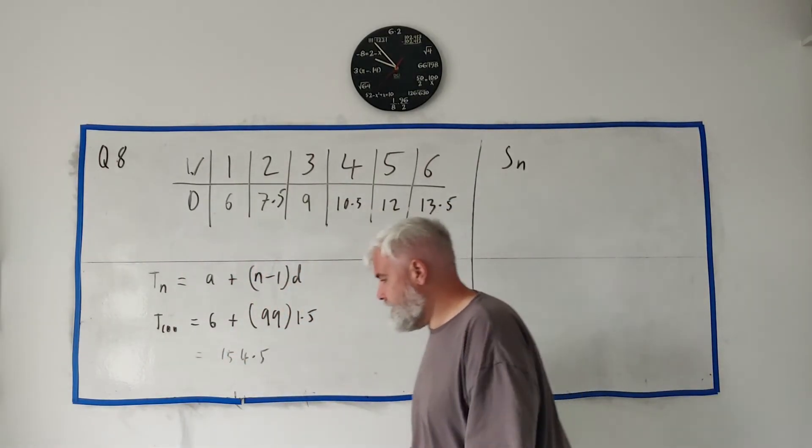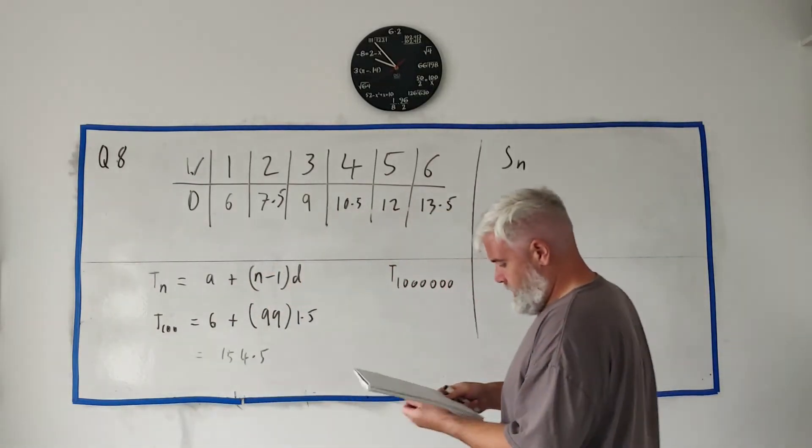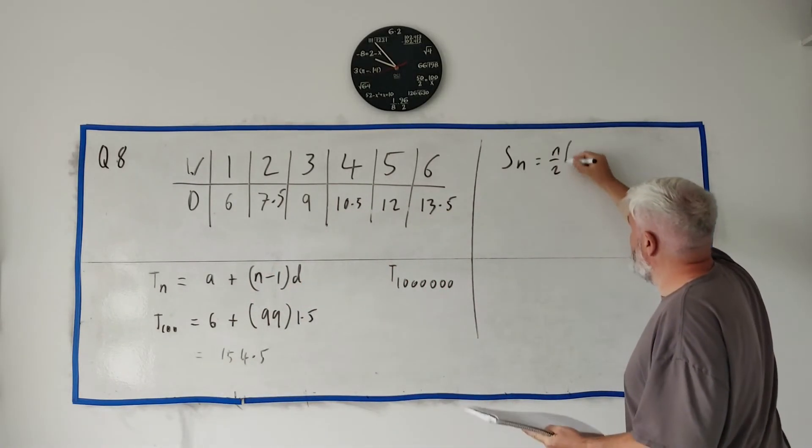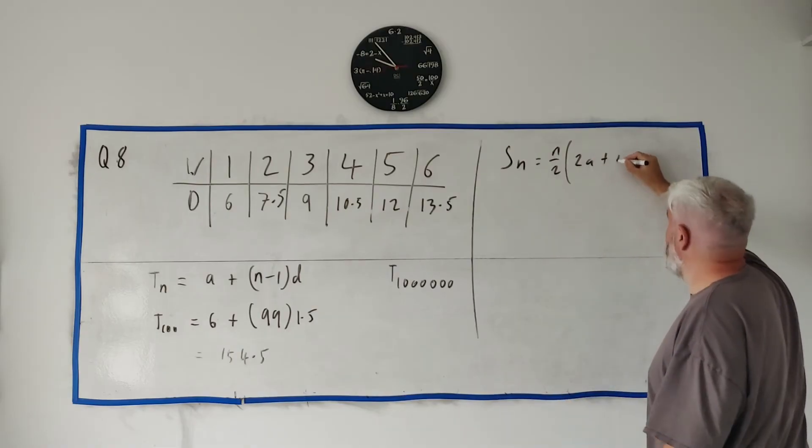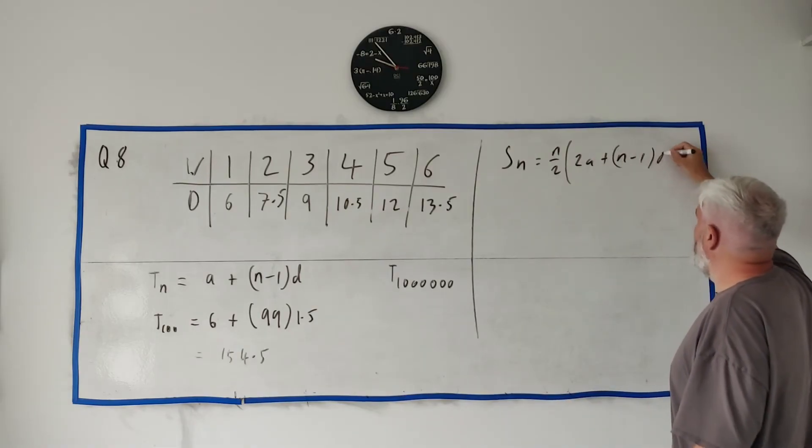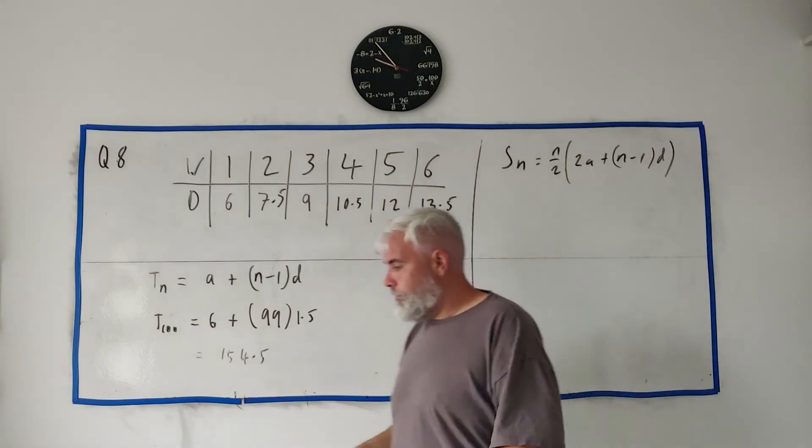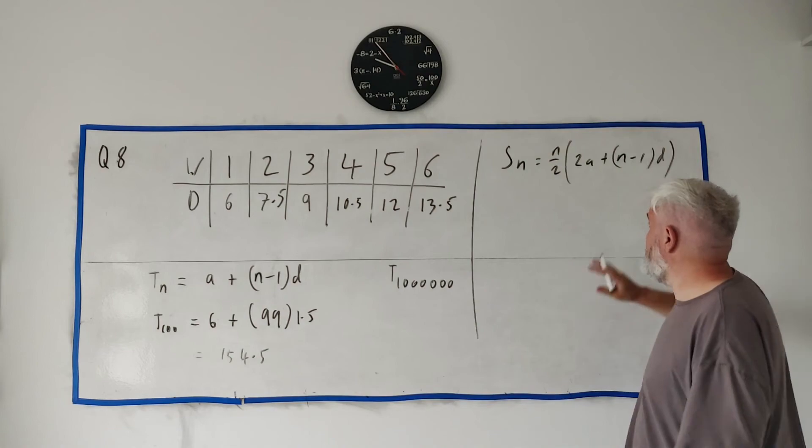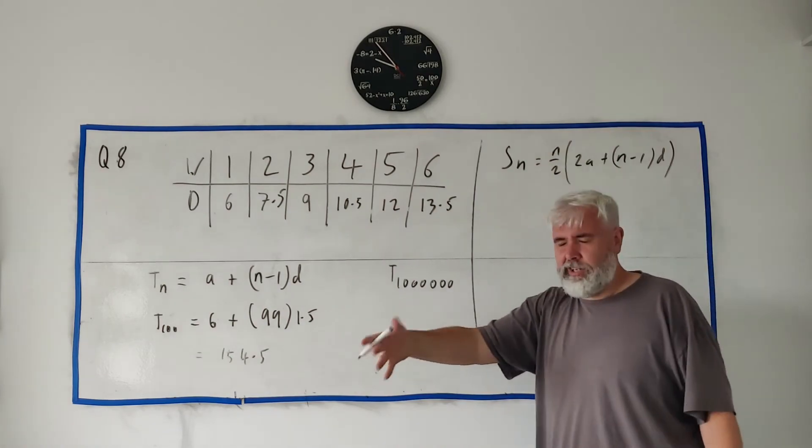There is a formula for s_n. Let me see, I have it written down here: it is n divided by 2 multiplied into 2a plus n minus 1 times d. That's a formula we use a lot, so you do need to remember it, but well, you don't need to remember it—it's in your book.